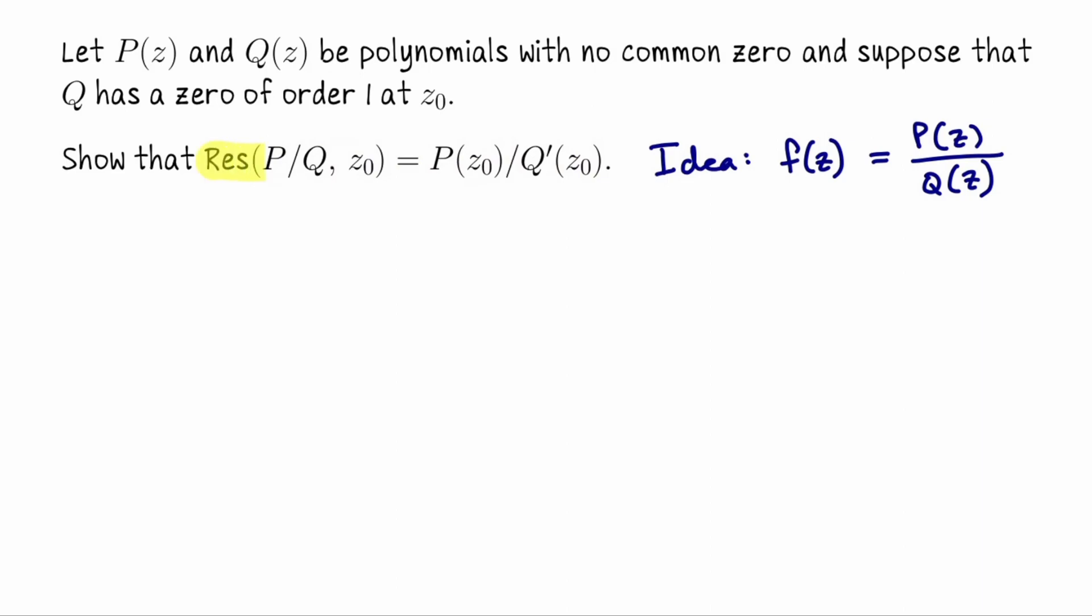Alright, let me prove this formula. It's a short proof and then we will do two examples. Since z₀ is a simple pole, meaning it only appears in the factorization of the denominator Q once, the residue of our rational function f at z₀ is computed by taking the limit as z approaches z₀ of the expression z minus z₀ times f, or rather to be more specific, times P of z divided by Q of z.